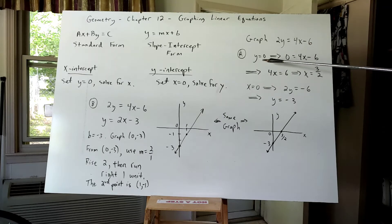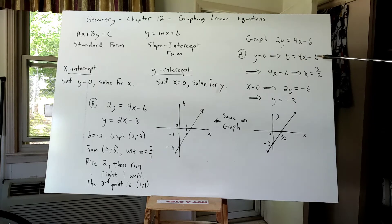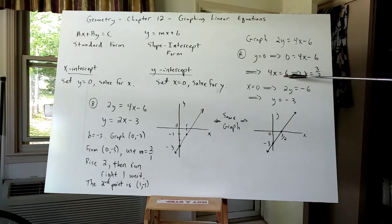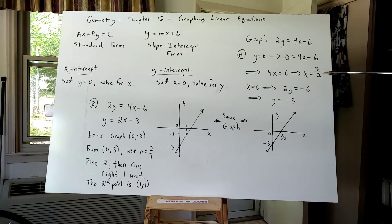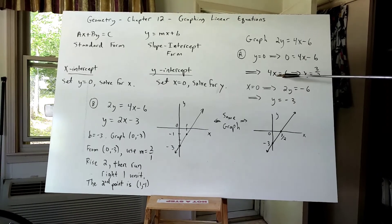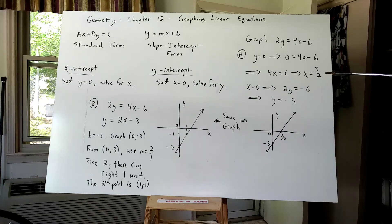For part A, I'm going to first set the Y of this equation equal to zero and solve for X. Setting Y equal to zero implies that two times zero is zero, which will equal 4X minus six. This gives me, if I add six to both sides, 4X equals six. Then if 4X equals six, this would imply that X equals three halves, which comes from dividing both sides by four.